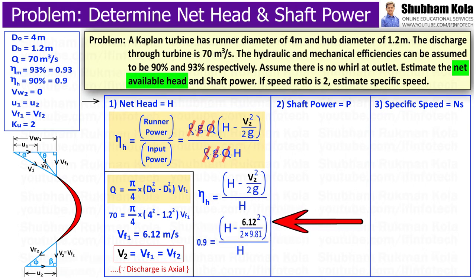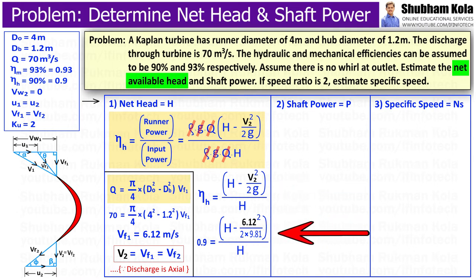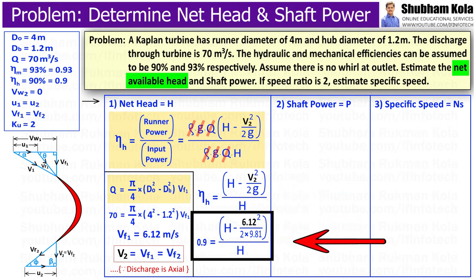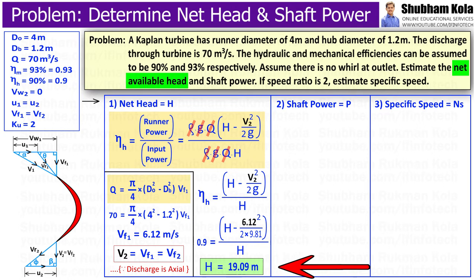Substituting this value into the hydraulic efficiency formula, with g equal to 9.81, we calculate and get the net head H equal to 19.09 meters.